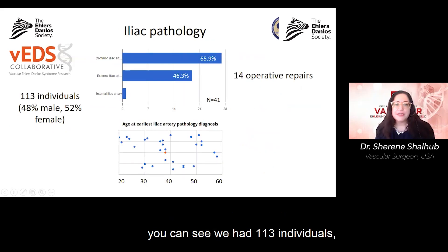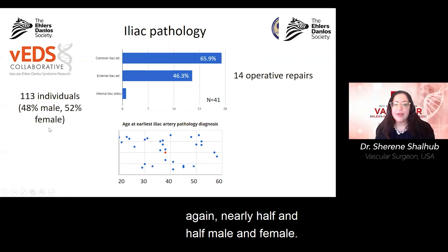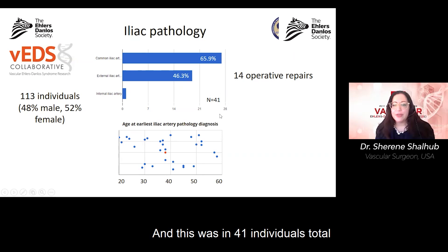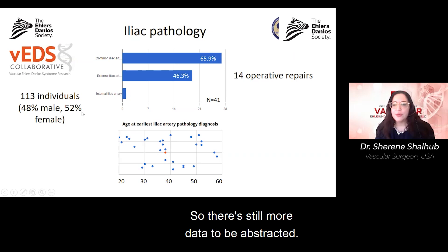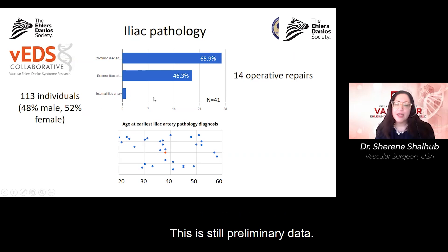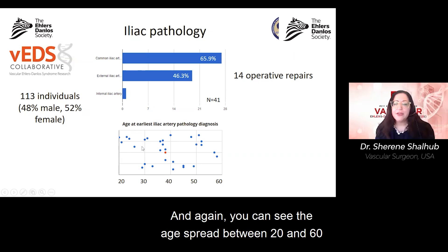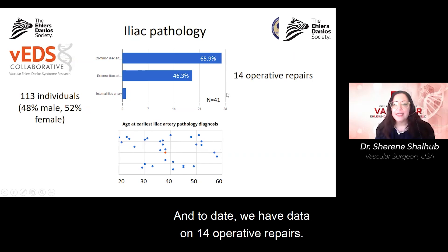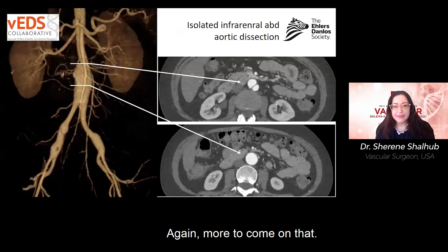For iliac pathology, in our series we had 113 individuals — again, nearly half male and half female. The common iliac artery was the most commonly affected vessel, seen in 41 individuals from whom we could abstract data. This is still preliminary, and the age spread at diagnosis ranges broadly between 20 and 60. To date, we have data on 14 operative repairs, with more to come.